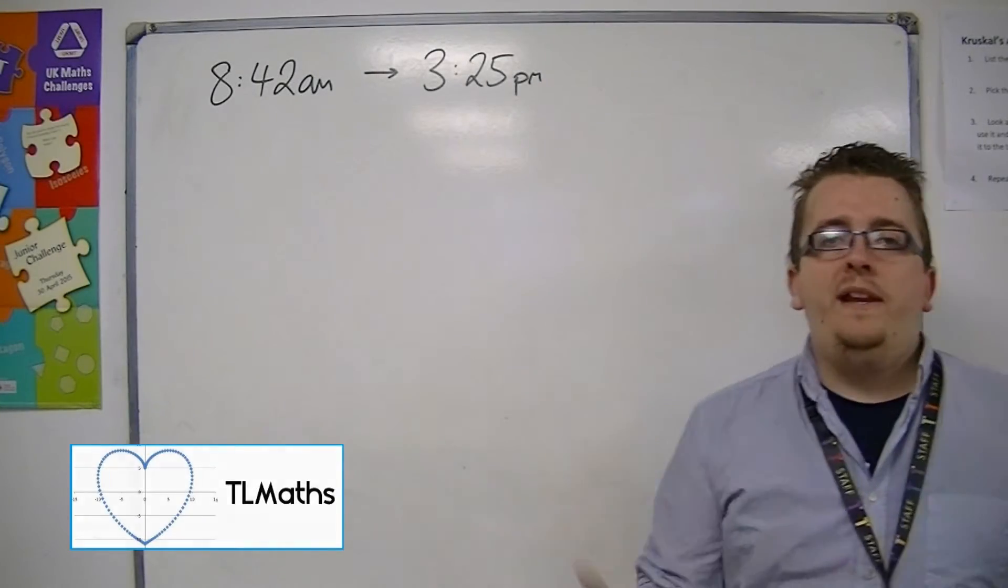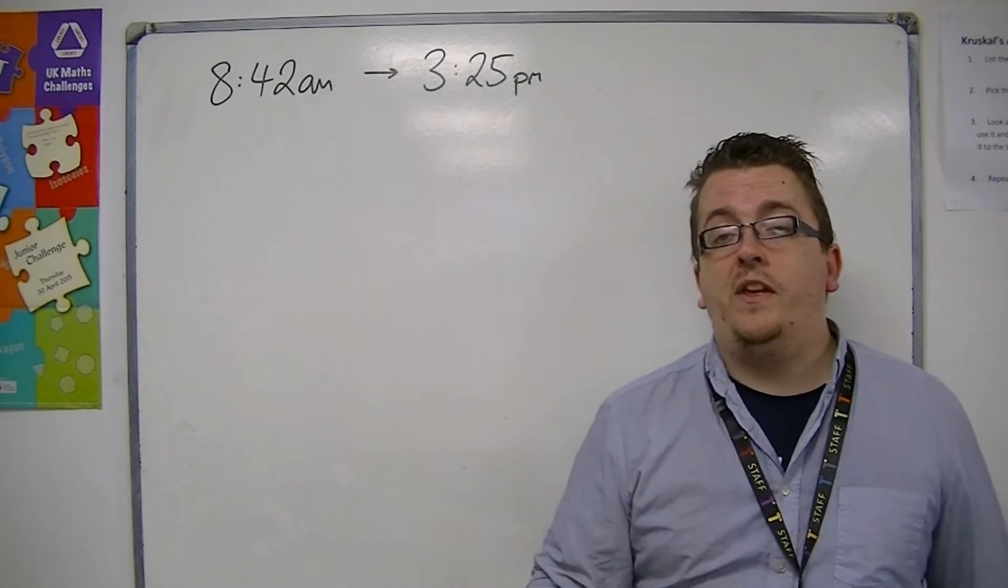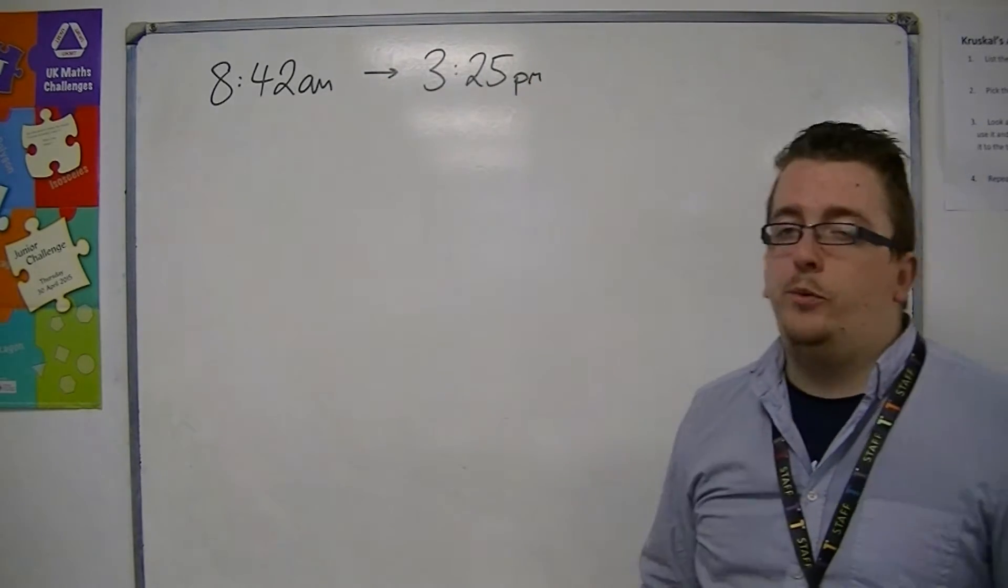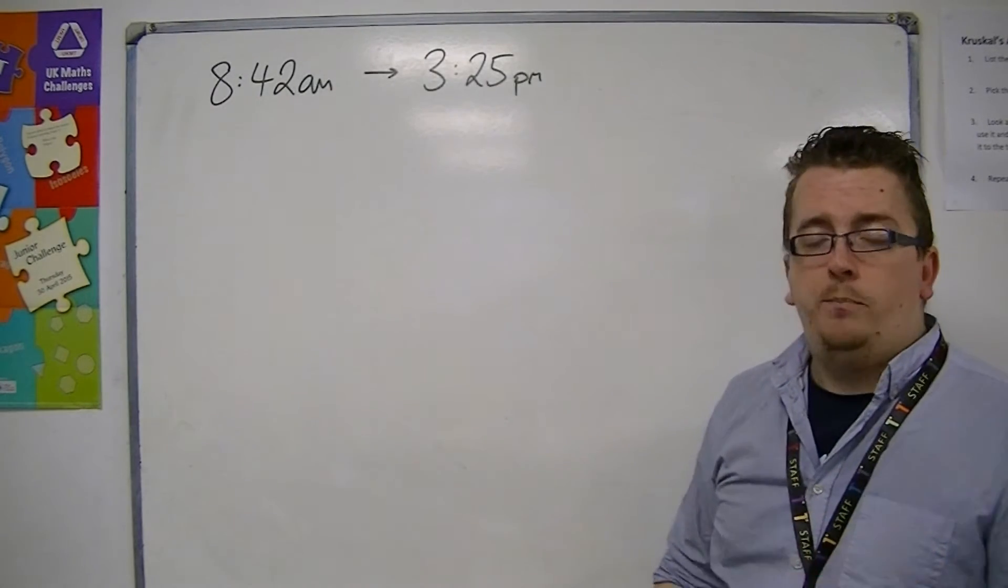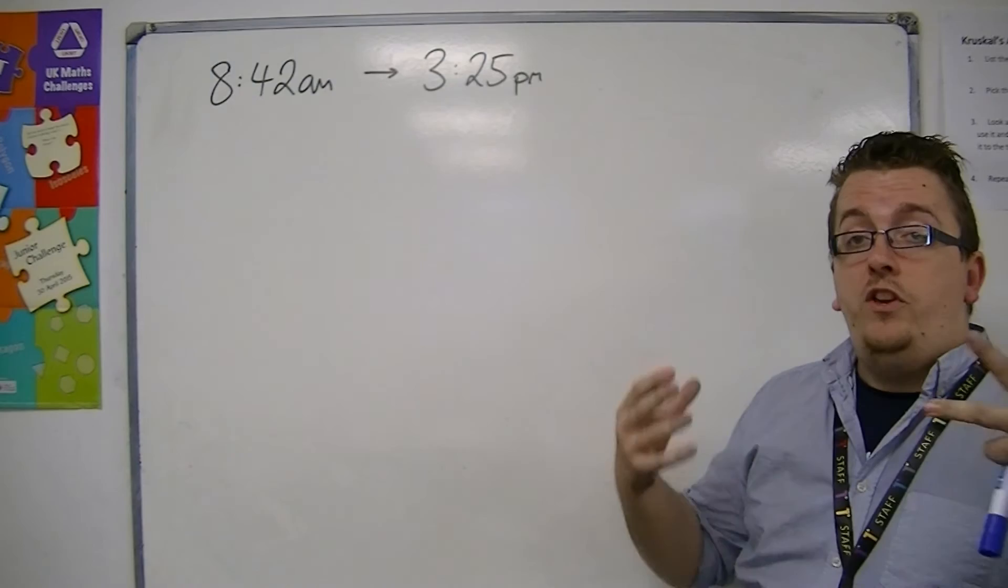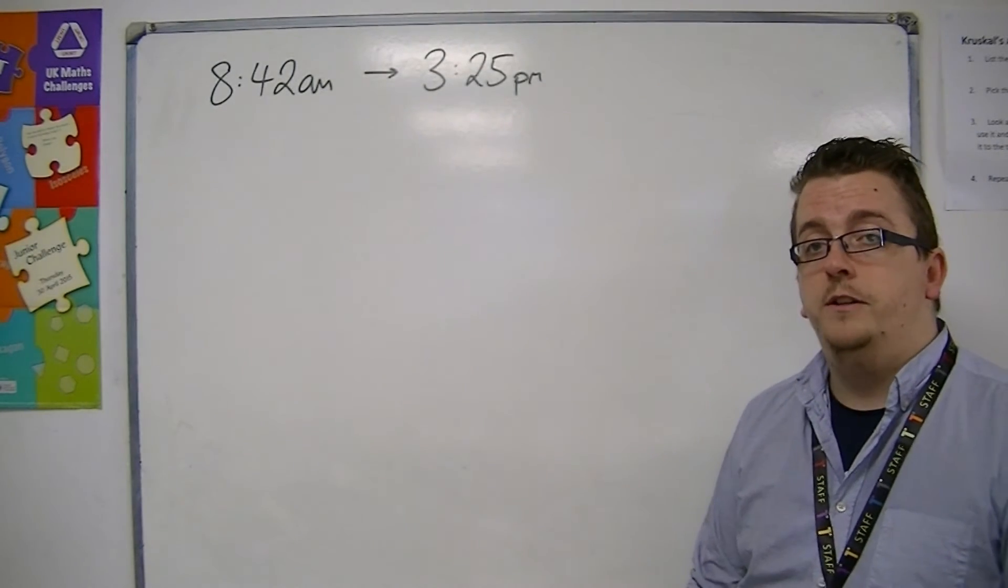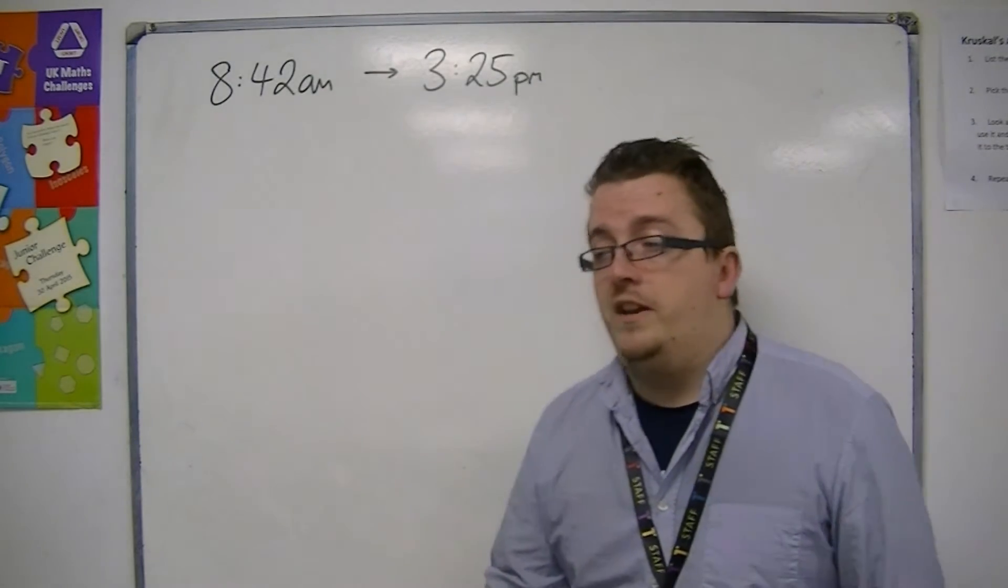Let's say we needed to find out how many hours and minutes there were between 8:42 AM and 3:25 PM. Now, this problem is made a lot simpler if you consider both times in 24-hour clock. That's only really my personal preference. You might prefer to do it another way.